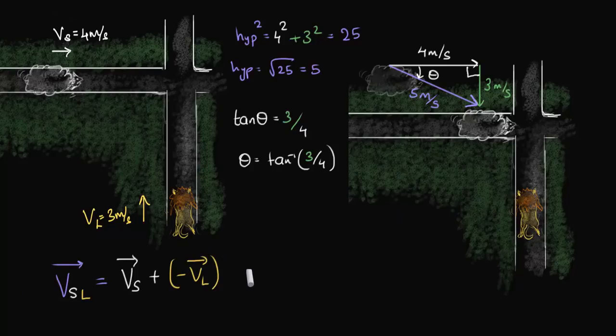Just to make it more concise, we have a plus of a minus, we will rewrite this as velocity of the sheep with respect to the lion as velocity of the sheep minus velocity of the lion, right? And this is the same as this.